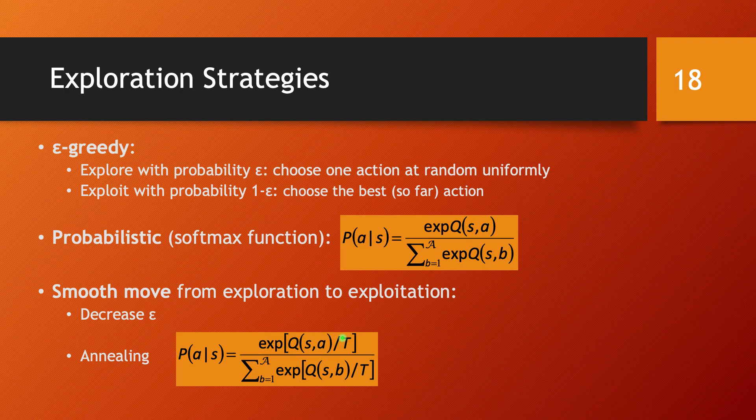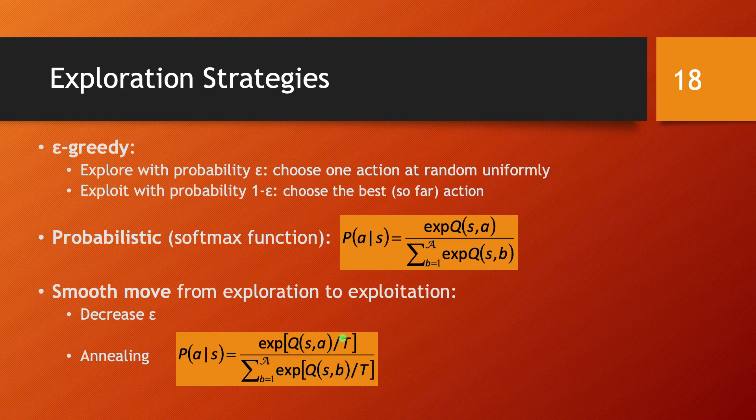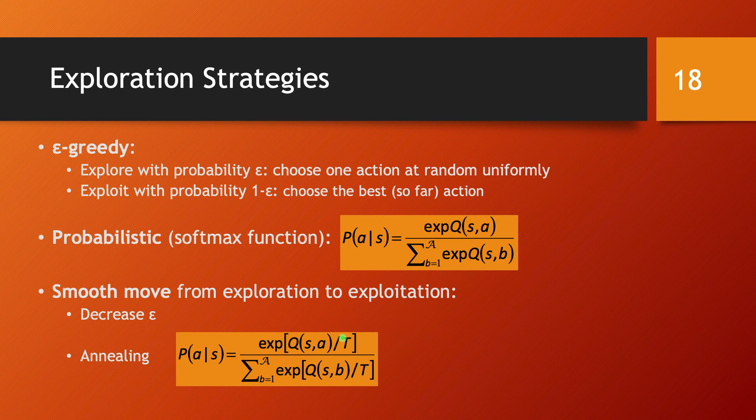And the point is that when T is large, all probabilities are equal, and we will get exploration. On the other hand, when T is small, it's the better actions that are going to be favored. So the strategy is going to start with a large temperature variable and decrease it gradually. And this is exactly what the annealing procedure stands for.